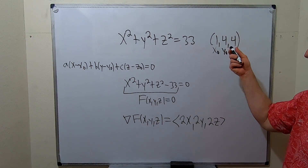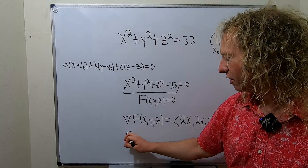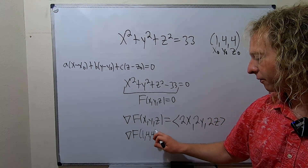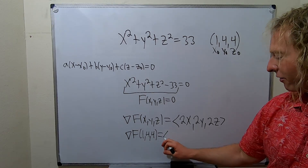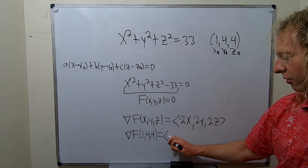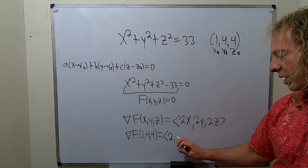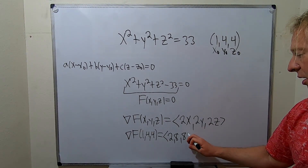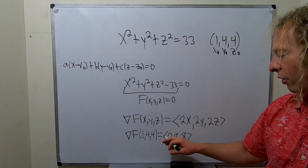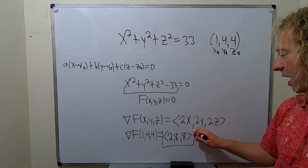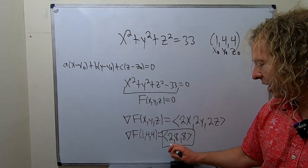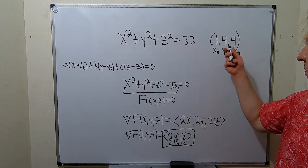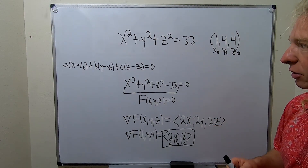Now we just plug in our point. The gradient evaluated at (1, 4, 4) gives us: 2 times 1 = 2, 2 times 4 = 8, and 2 times 4 = 8. So our gradient vector is (2, 8, 8). This is our A, B, and C.